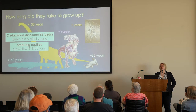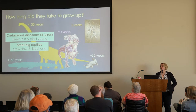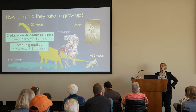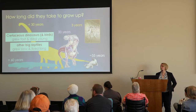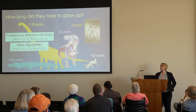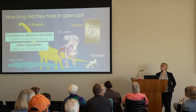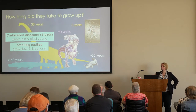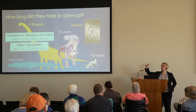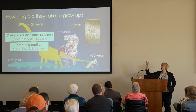A giant tortoise may live for 150 years and take 100 years to reach full size. A lion, one of our big mammals, may take 5 or 6 years to reach full size and certainly won't live 150 years. Our biggest, longest-living mammals like whales grow much slower for their size. We think there's a connection between how long it takes you to get full size and how long you can live.